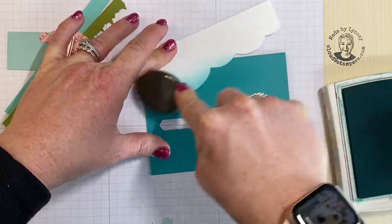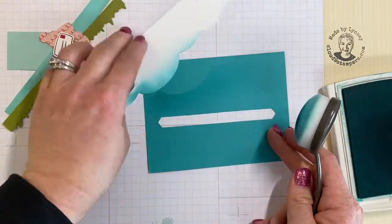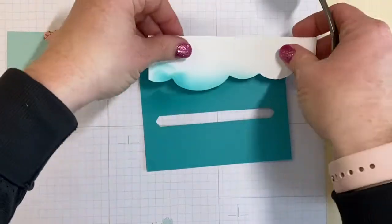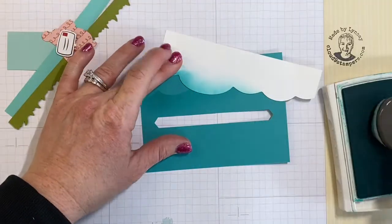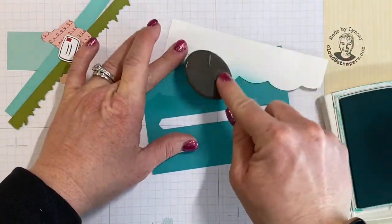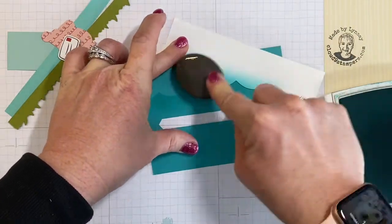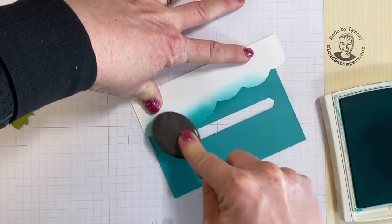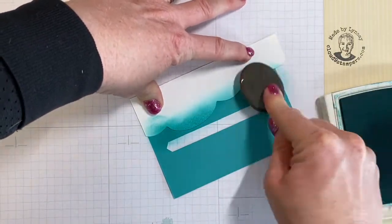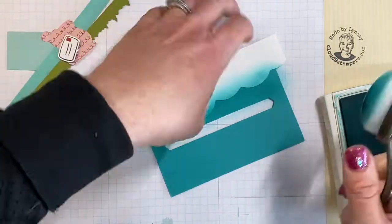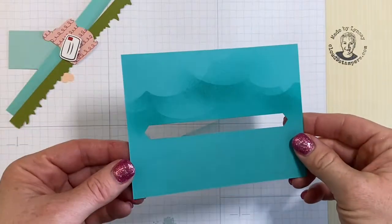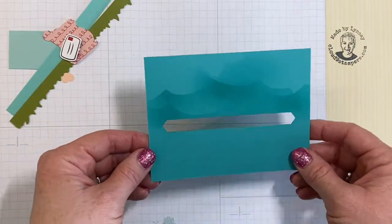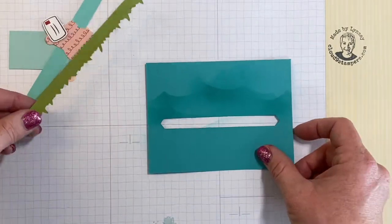Then we're going to lift that and move it over here. So there you go, once you've got the amount of clouds that you'd like added, the next thing you're going to do is add the grass.